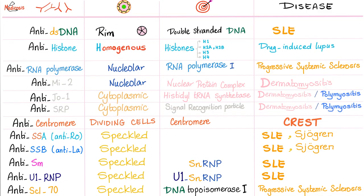Anti-centromere antibody: pattern is dividing cells; the target is the centromere; seen in limited CREST syndrome — limited scleroderma. We no longer say scleroderma; we say systemic sclerosis, because scleroderma literally means tightened skin, but the disease involves not just skin but also kidney, lung, esophageal, and other systemic problems.